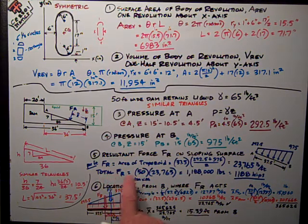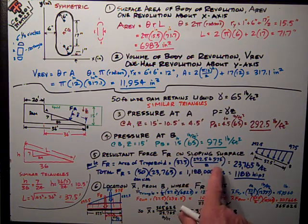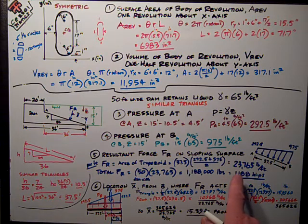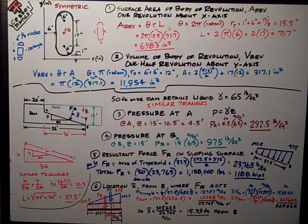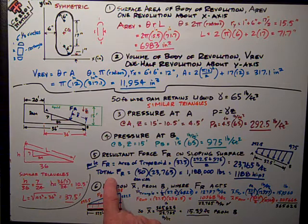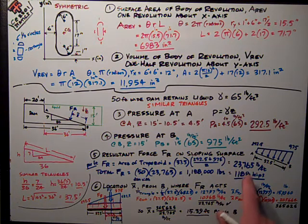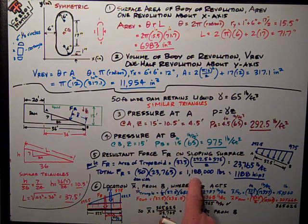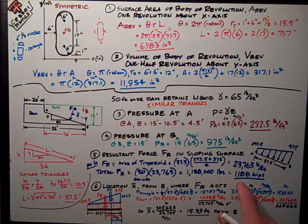The area of a trapezoid is base times the average height, 292.5 plus 975 divided by 2, times the base 37.5, gives 23,765 pounds per foot. Sometimes I want to know that number, pounds per foot of width of the dam. On this test, we wanted to know the total force, so I needed to multiply by the width of the dam, 50 feet. So I've got 50 times that number, gives me 1,188,000 pounds, or 1,188 kips.